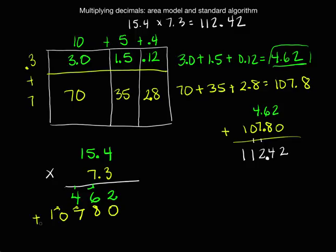We will add these together. When we add them together, 2 + 0 is 2. We should get the same number that we just got when we did the area model. 6 + 8 is 14, regroup the 1. 4 + 7 + 1 is 12, regroup the 1. 1 + 0 is 1, and we have another 1.